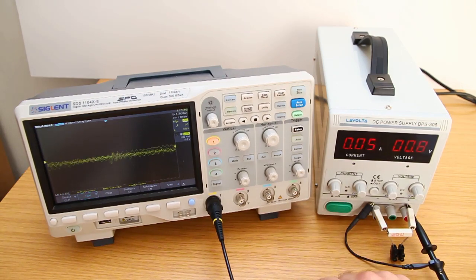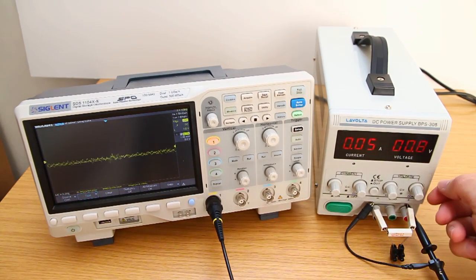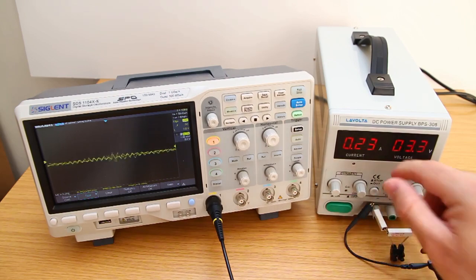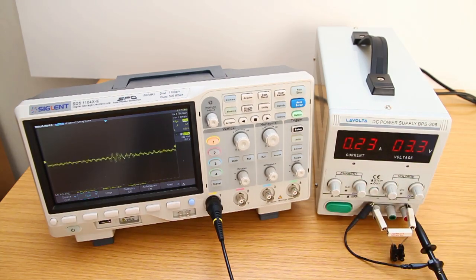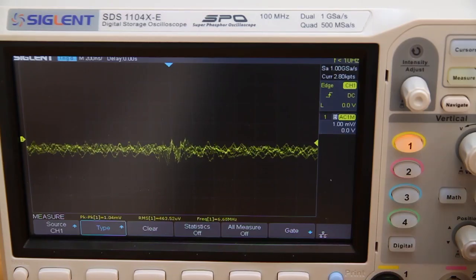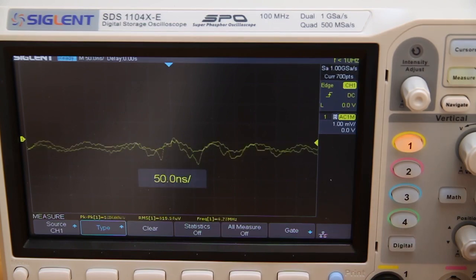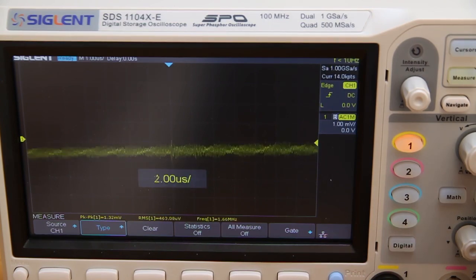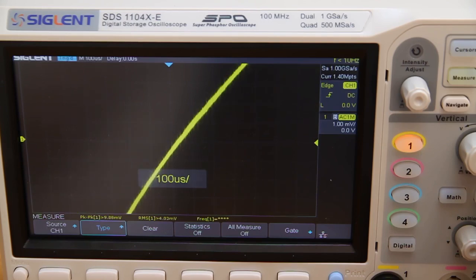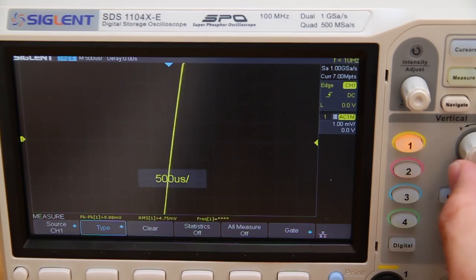Let's turn on the power supply and set it to 3.3 volts. There we go, 3.3 volts. We're drawing 230 milliamps. Okay, here we go. Oh, this doesn't look great.